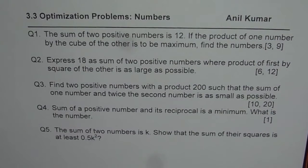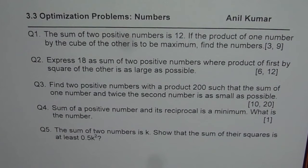Question number 5: the sum of two numbers is k. Show that the sum of their squares is at least 0.5k squared.